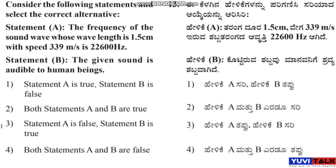The right answer is option 1: Statement A is true, Statement B is false. For a wavelength of 1.5 cm and speed of 339 m/s, the frequency of the sound wave is 22,600 Hz, which is correct. However, Statement B is false as this frequency is not audible to human beings. So the answer is the third option.